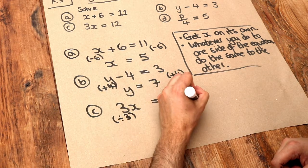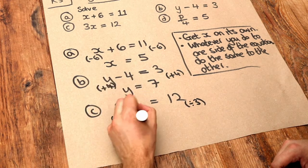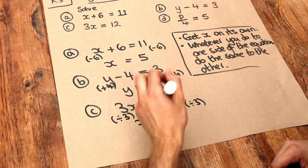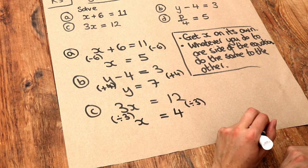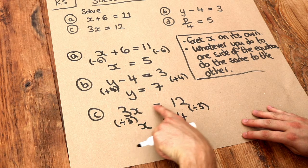So dividing by 3 will cancel out the times by 3, just leaving x. And 12 divided by 3 is 4. There we go. We've got the solution. And if we just check that, 3 times 4 is equal to 12. That's true.